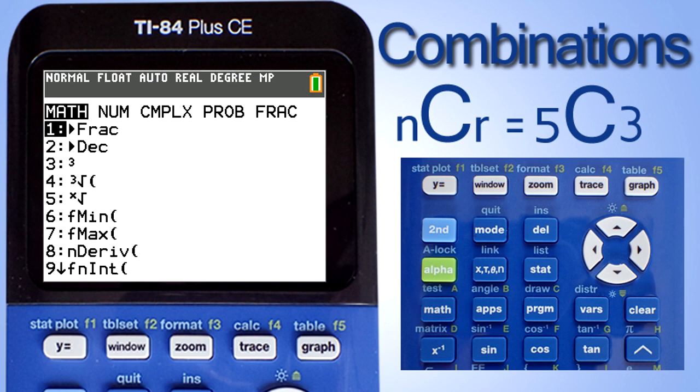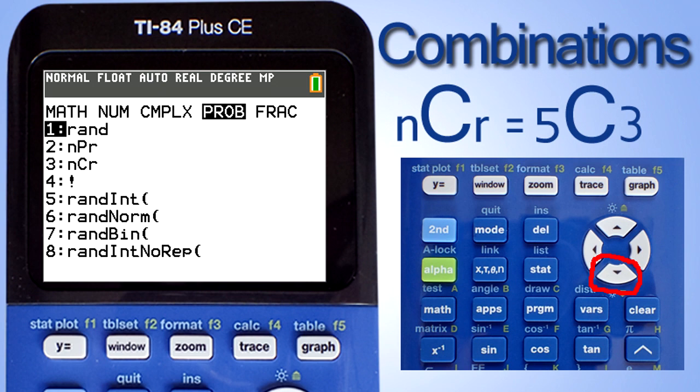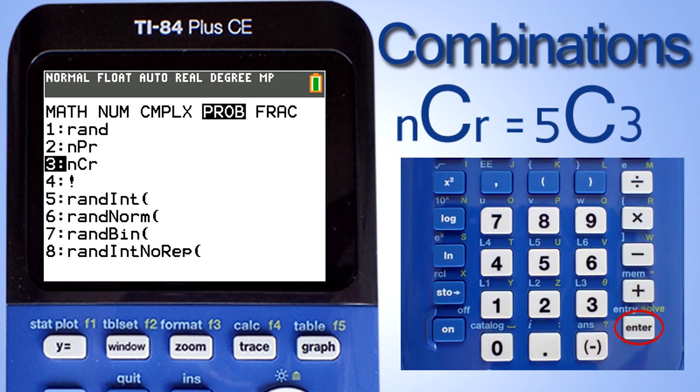This screen pops up. Use the right arrow key and move over to PROB. PROB stands for probability. Now use the down arrow key and go to the number three, n-c-r. Press the enter key.